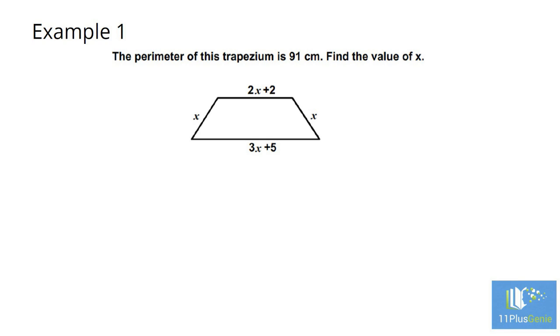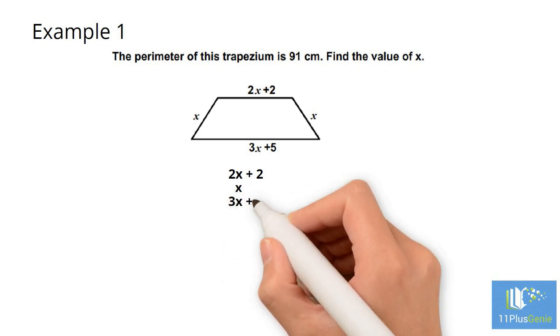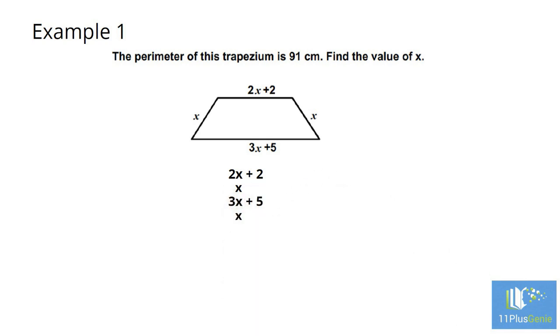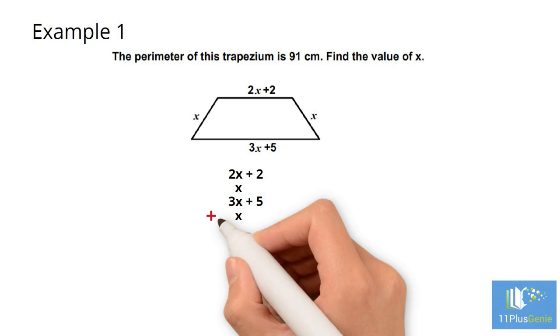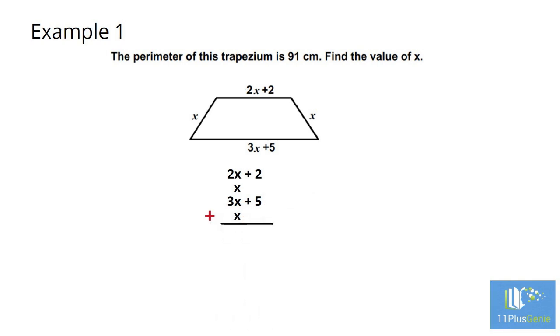It might be easier for you to write down the sides so that the x's are underneath each other and the numbers are underneath each other. We have 2x plus 2 plus x plus 3x plus 5 plus x. If we simplify, we add the x's together to get 7x and we add the numbers plus 2 plus 5 to get plus 7.